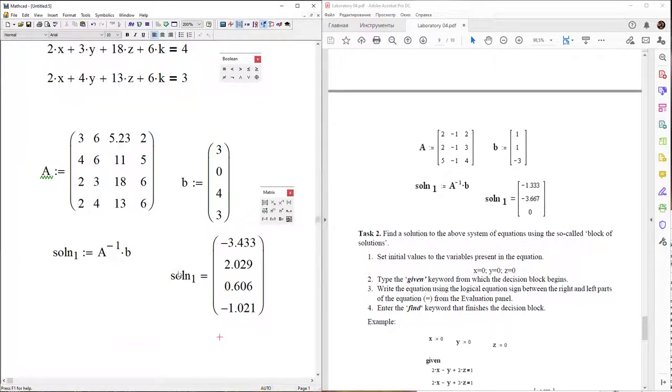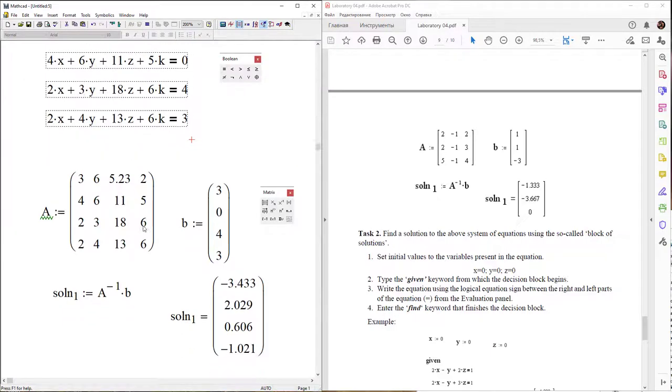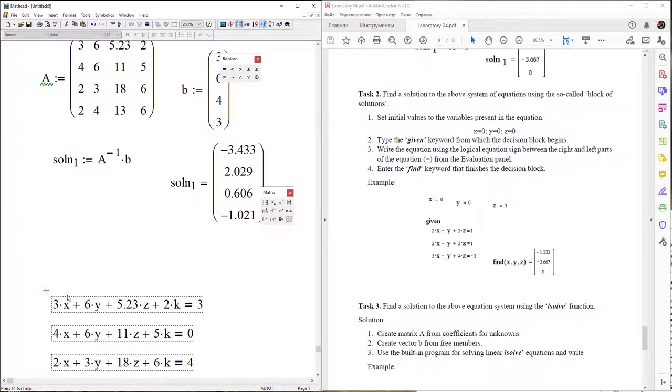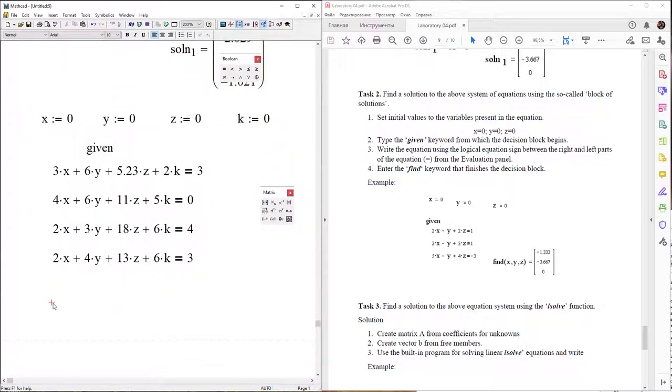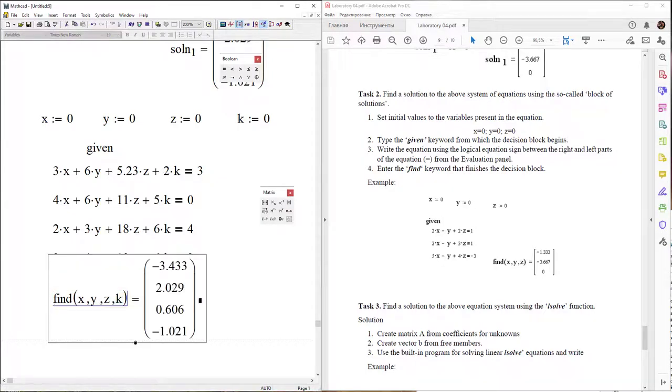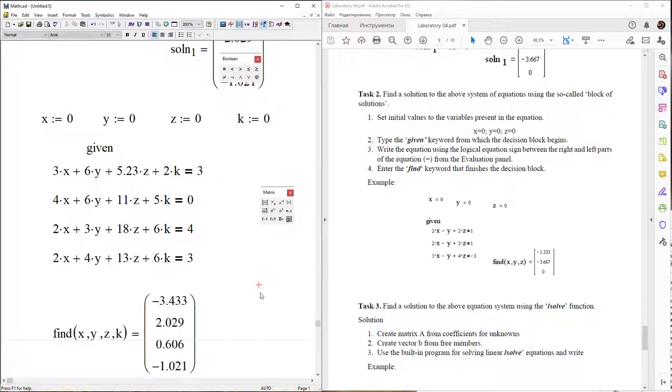Next solution method is using the Given-Find block. So x equals 0 as starting point to our solution. Then type Given operator and operator Find(x, y, z, k). This is the next method.